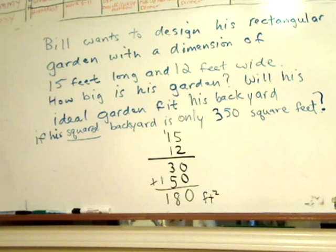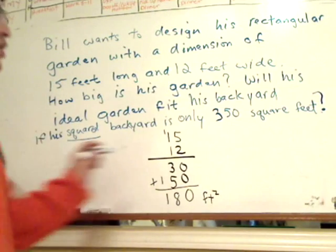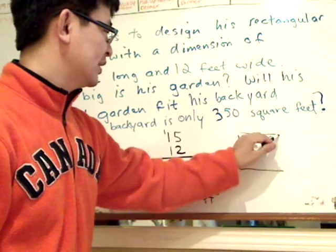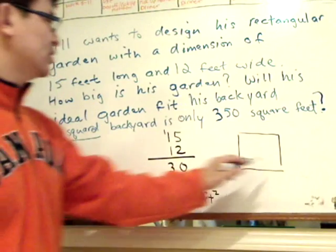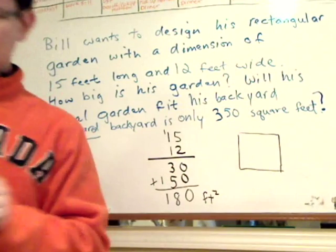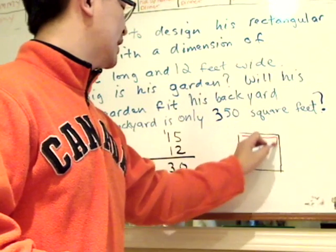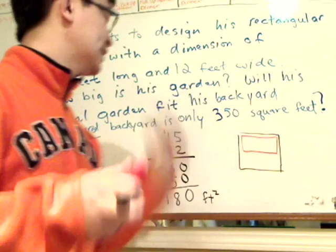The next question of course is, will his ideal garden fit his backyard if his squared backyard is 350 square feet? Okay, that's a little bit tricky. Now we know here it's a square backyard, so something like that. And his garden is rectangular, so it should be something that looks like that, correct?